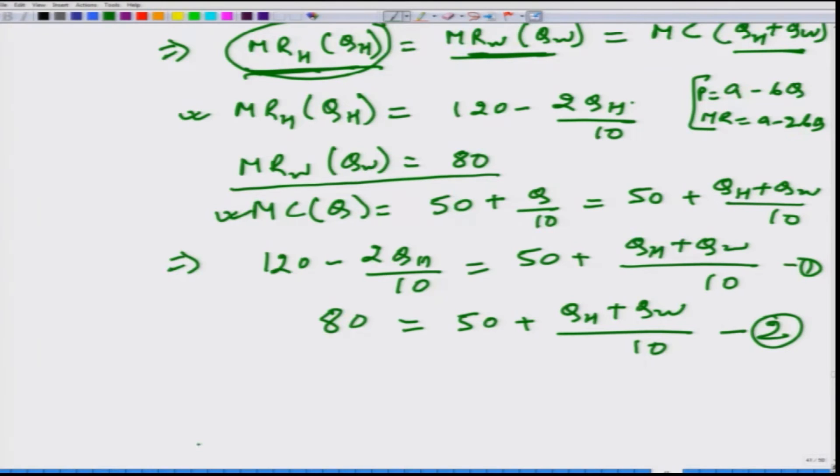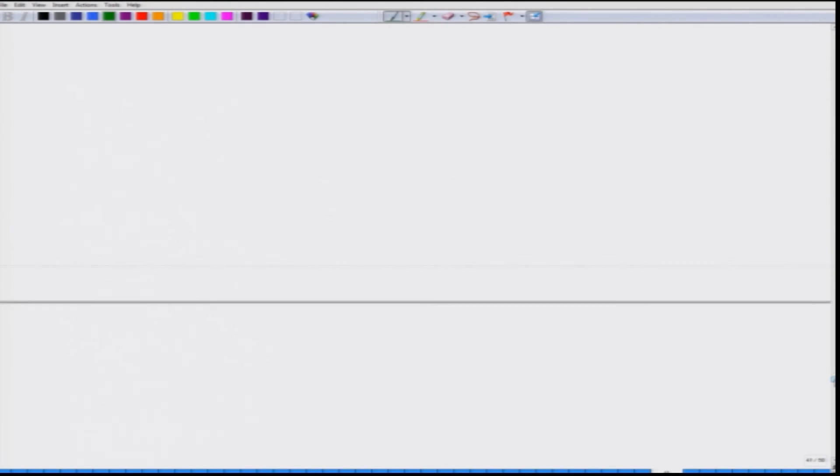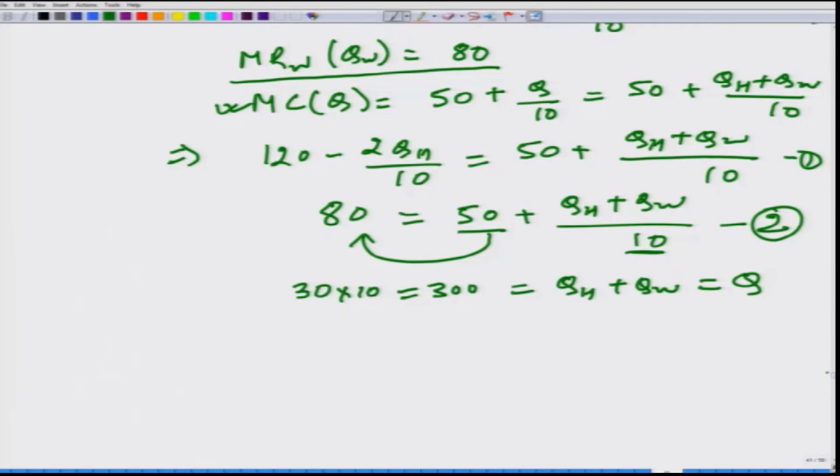From second equation we can obtain the QH plus QW and how much do we get? If we rearrange it, we take this 50 on the left hand side we get 30 and if we multiply it by 10 on both the sides we get 300 on the left hand side which is equal to QH plus QW which is equal to Q. This firm will produce a total of 300 units of output.